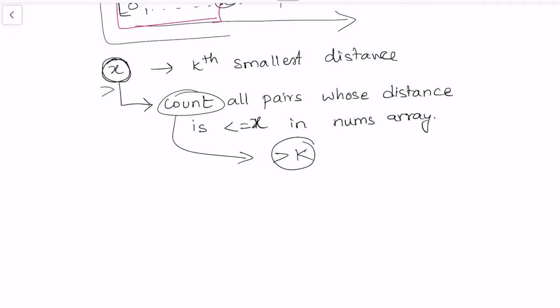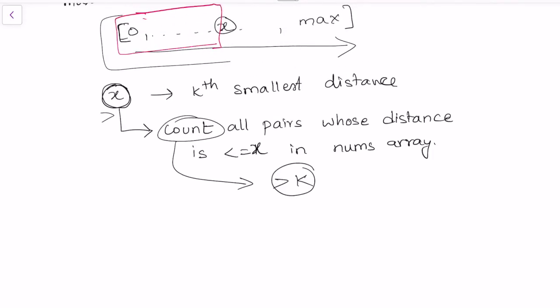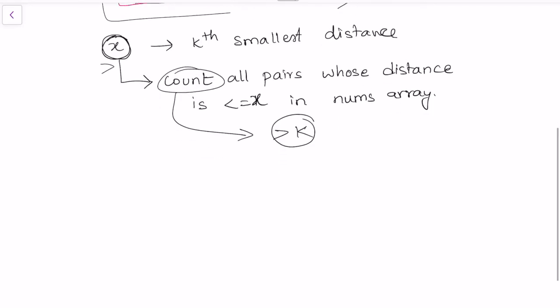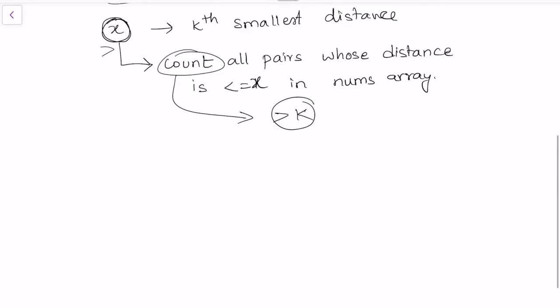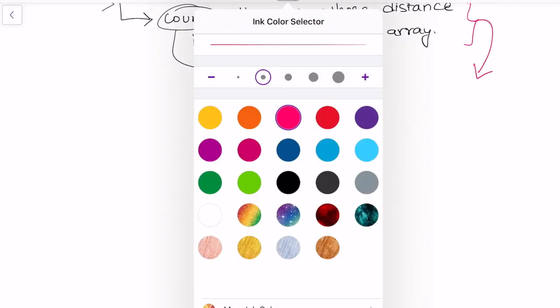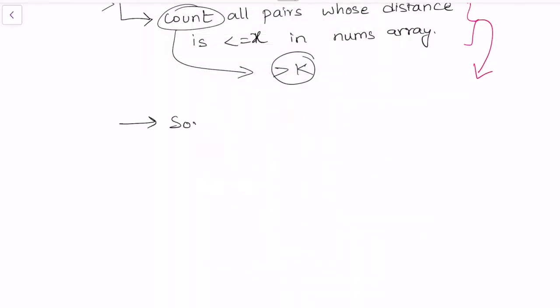We again find the count of all pairs whose distance is less than or equal to x. If the count is greater than k we reduce, and if it's less than k we search in the next half. Now, counting all pairs is O(n²) on an unsorted array, which defeats the purpose of binary search. So we sort our initial nums array to enable an efficient count.